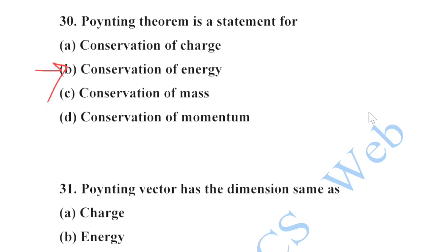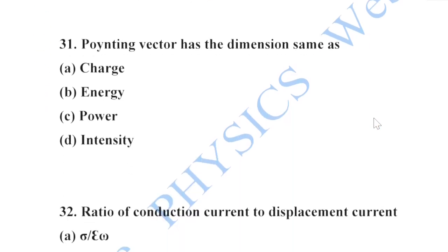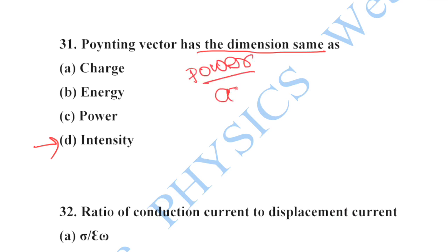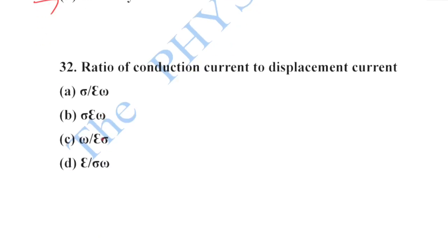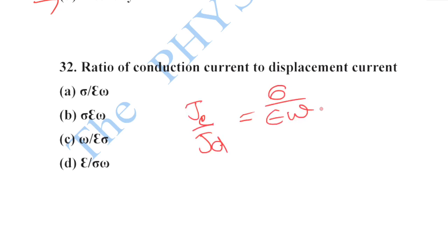Next: the Poynting theorem is a statement for conservation of energy. Option B is your correct option. The Poynting vector has the dimension same as intensity, defined as power per unit area. Option D is your correct option. The ratio of conduction current to displacement current J_c/J_d equals σ/ε. Option A is your correct option.